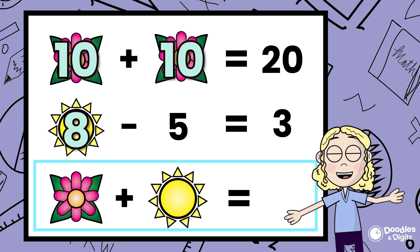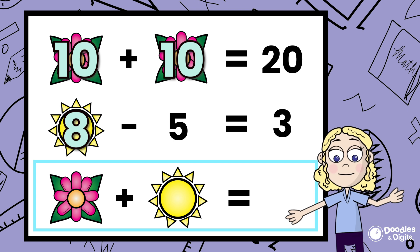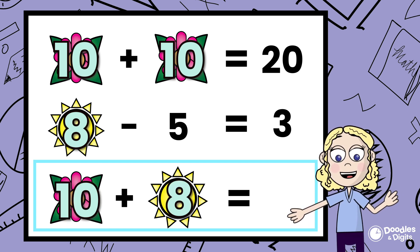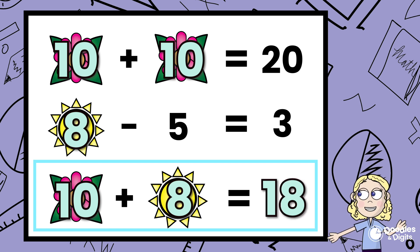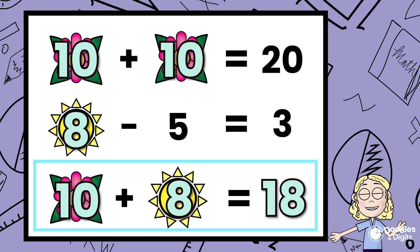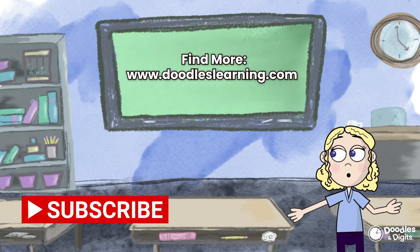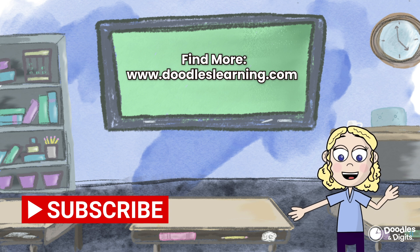This last problem, we just have to put those two numbers in. The flower, which is 10, plus the sun, which is 8, equals our answer, which is 18. Did you get it correct? Did you solve it in a different way or start in a different spot? If you want more puzzles like this, make sure you like and follow. We'll put out new puzzles like this for you to try to solve. Bye!